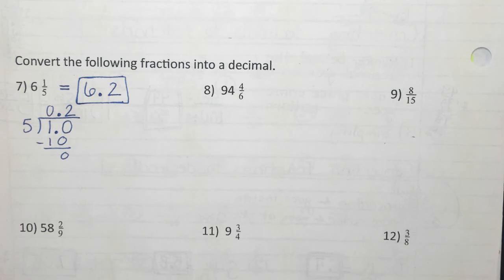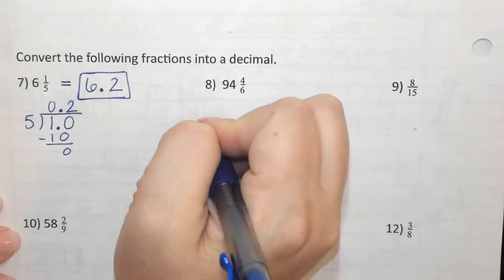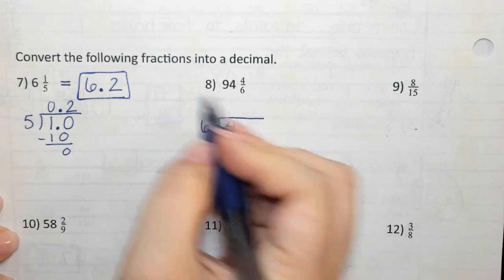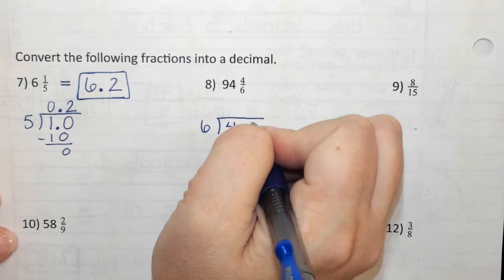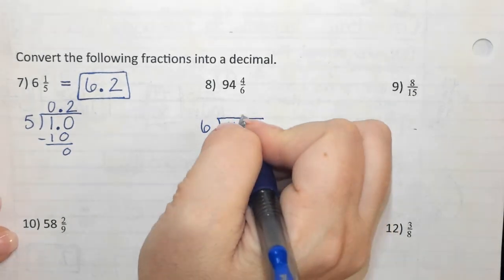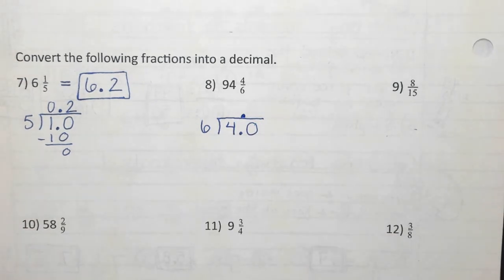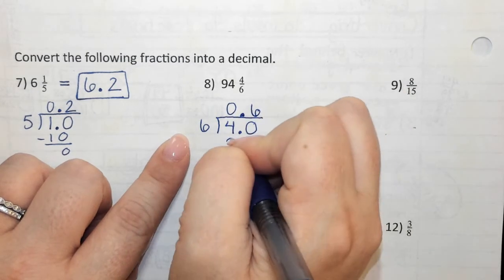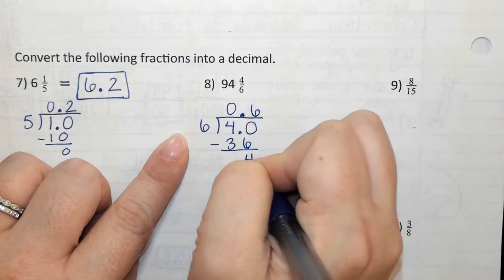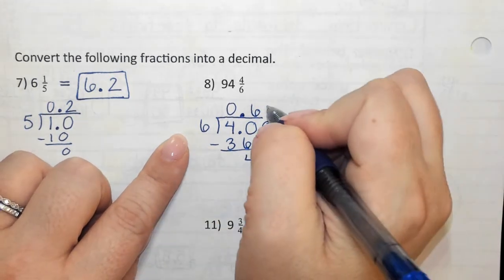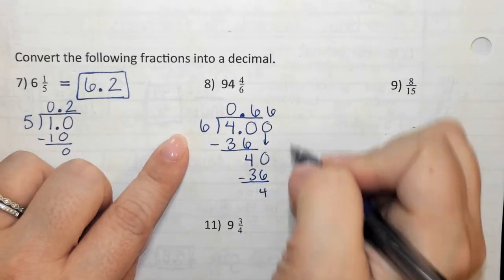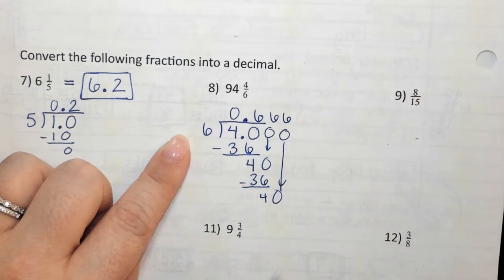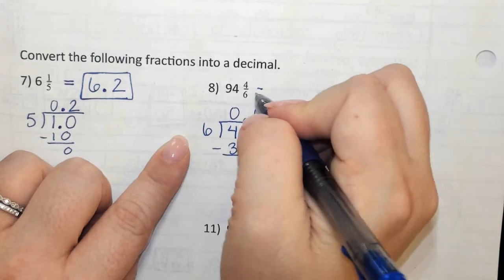Number eight — what am I going to put at the door? Six. And what's going to go in the house? Four. We do not care about the 94 right now. I'm making a decimal, so let's add a decimal and a zero. Don't forget to raise it up to the roof. How many times will six go into four? Zero. How many times will six go into forty? Six times. Six times six is 36. When I subtract I get four. If I add a zero and bring it down — six will go into forty six times again. Do you see what's happening? It's repeating.